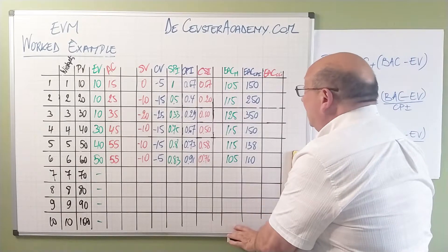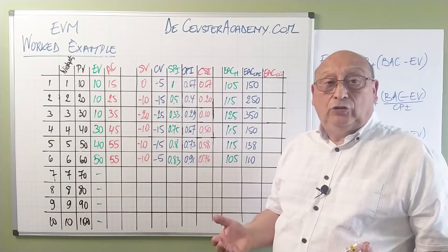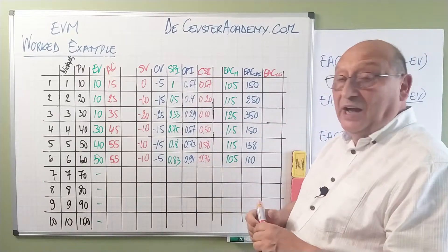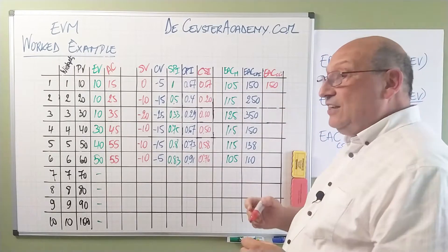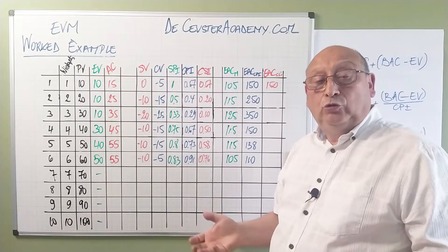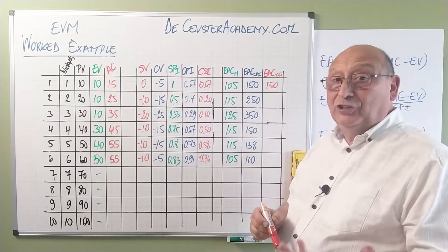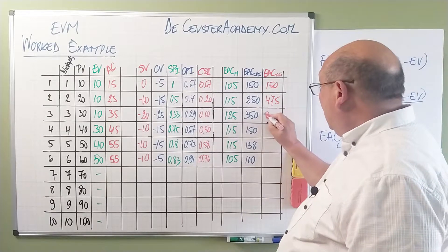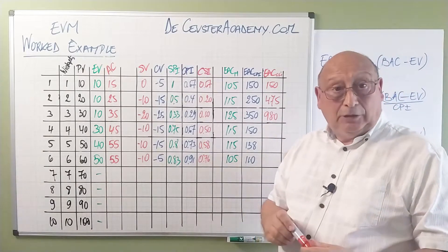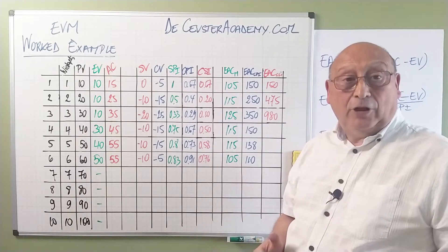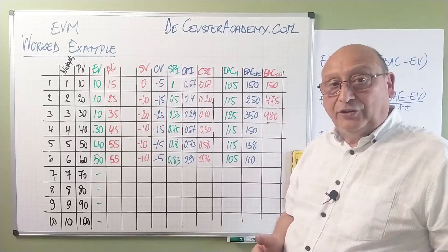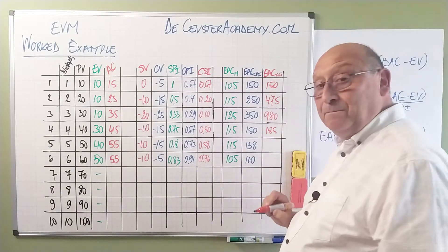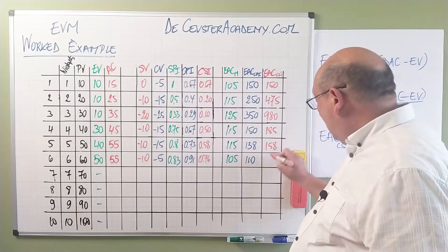There is another story with the CSI because here we multiply the SPI with the CPI. For the first period, the SPI is 1, so we have the same value — our pessimistic equals our probable value. From there it goes worse: we find a value of 475, then 980, which is a little bit catastrophic. You can imagine some panic at those increasing values. But in the following steps it gets better: 185, 158, and 121.